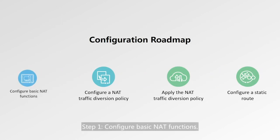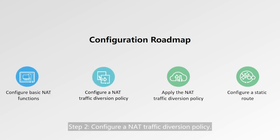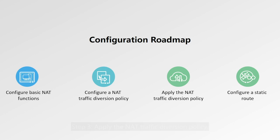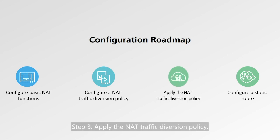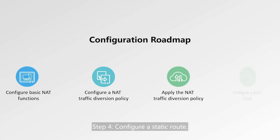The configuration roadmap consists of four steps. Step 1: Configure basic NAT functions. Step 2: Configure a NAT traffic diversion policy. Step 3: Apply the NAT traffic diversion policy. Step 4: Configure a static route.